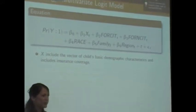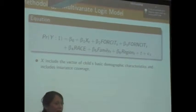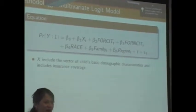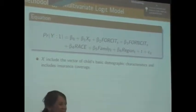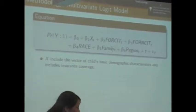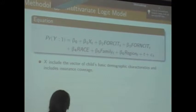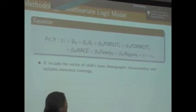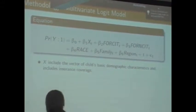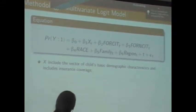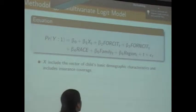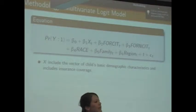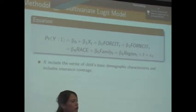I'm going to go fast because this sounds a little bit complicated, but it's not as complicated as it looks. This is a probability model that is trying to say: what is the probability that a child goes to the doctor at least once, given certain characteristics?